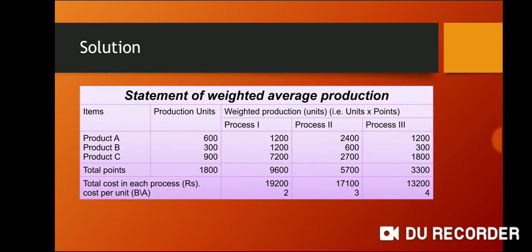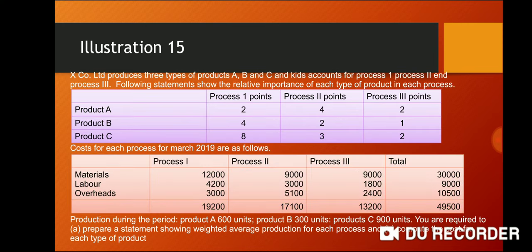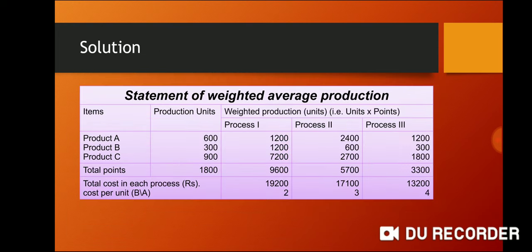The following statements show the relative importance of the product in each type of product, using the statement of weighted average production. If that was the value, it is $600 into $2.